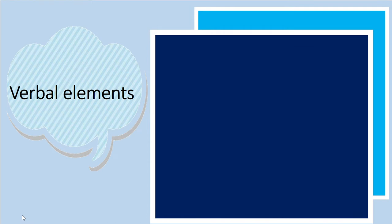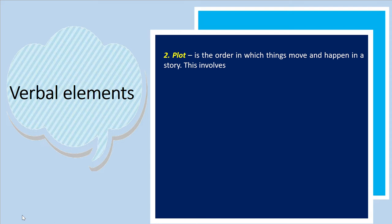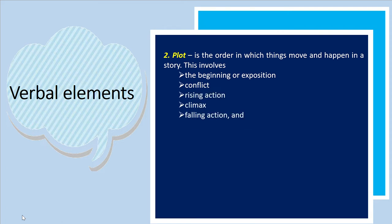The next verbal element is plot. The plot is the order in which things move and happen in the story. This involves the beginning or exposition, conflict, rising action, climax, falling action, and resolution or denouement. The beginning or exposition introduces or reveals the characters, background, and setting.